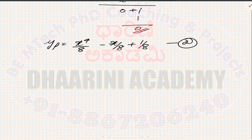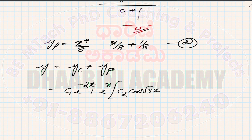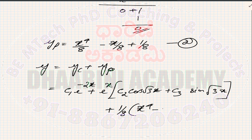The final answer is y = yc + yp = c₁e^(−2x) + e^x[c₂cos(√3x) + c₃sin(√3x)] + (1/8)(x⁴ − x + 1).